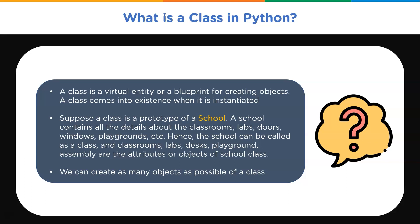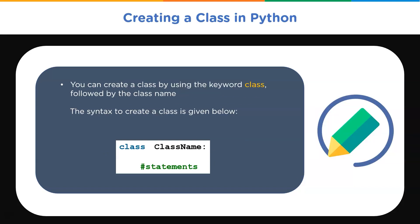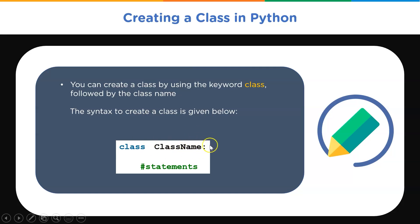A class comes into existence when it is instantiated or initiated, and we can create as many objects as possible in a class. In Python, a class is created using the keyword 'class' followed by the class name. The first string inside the class is called a doc string and has a brief description of the class. The syntax is: the class keyword, followed by the class name — which must be a valid Python name — then a colon, followed by the statements inside the class.